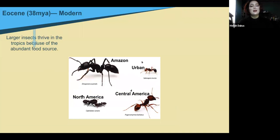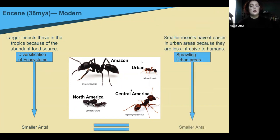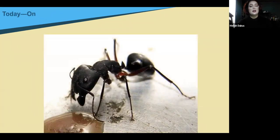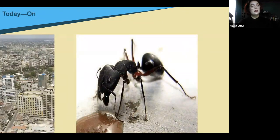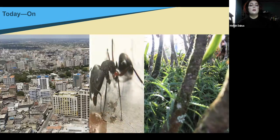From the Eocene to now, ants have on average gotten smaller. The diversification of ecosystems from tropical areas has made being smaller advantageous. Sprawling urbanization has also led to smaller ants. However, as urbanization continues to push ants to be smaller, climate change — which is increasing temperature and humidity — pushes ants to be larger, and there might not be a happy middle ground. Ants might be stuck between a hard place and a hot place.